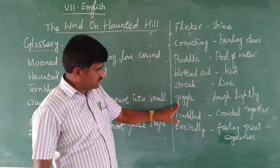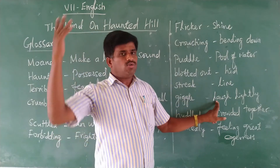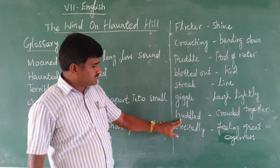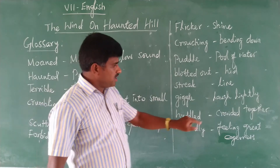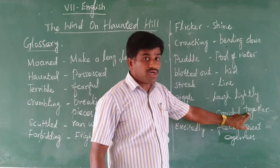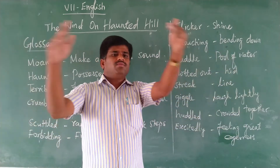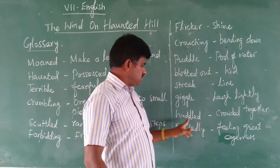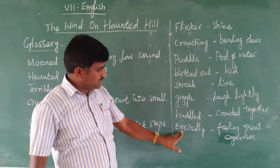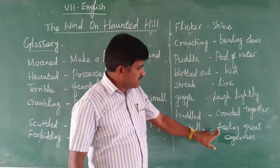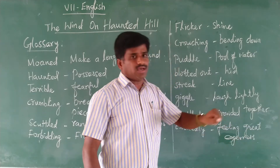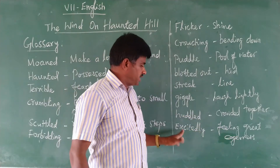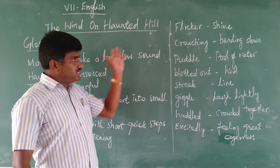The next word is 'Whistle,' which means a slight laugh — not a loud sound, it is a slightly light laugh. The next word is 'Uttered,' meaning crowded together — not one or two, but many of them standing there crowded. That is called uttered. The last word is 'Excitedly,' meaning feeling great eagerness — that eagerness should be in a great manner. These are the glossaries given in this lesson.